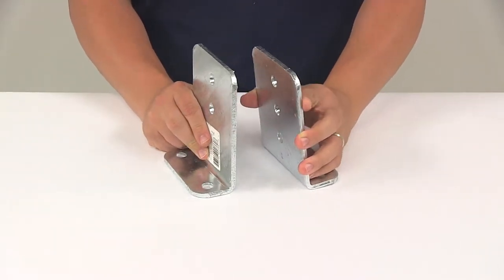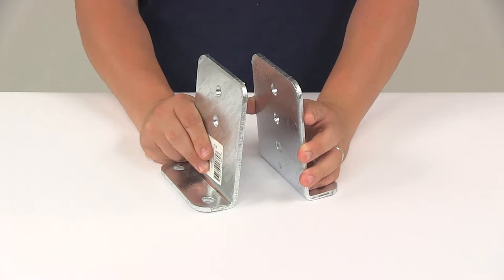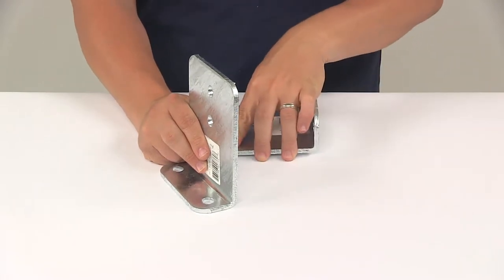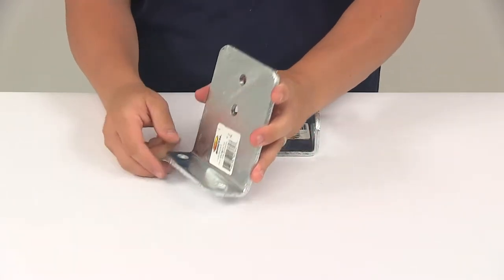Today we're going to be taking a look at the C.E. Smith heavy duty vertical bunk brackets. These heavy duty brackets let you mount a bunk board on your boat trailer.